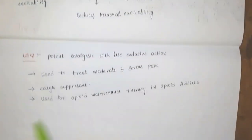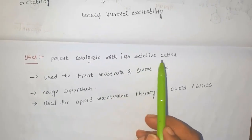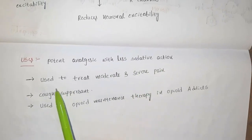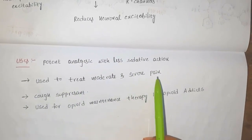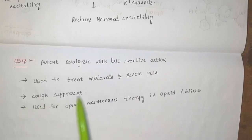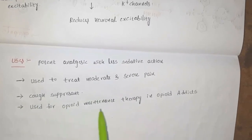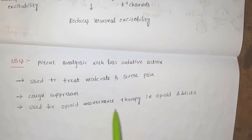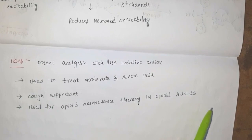Uses of methadone: it is a potent analgesic with less sedative action; used to treat moderate and severe pain; used as a cough suppressant; and used for opioid maintenance therapy in opioid addicts. Thank you.